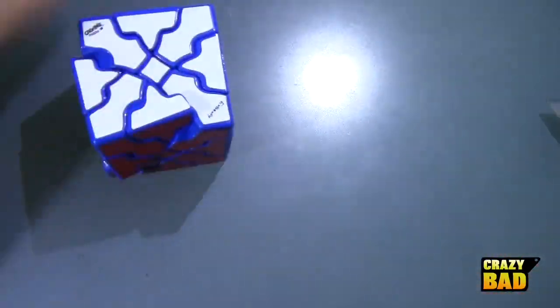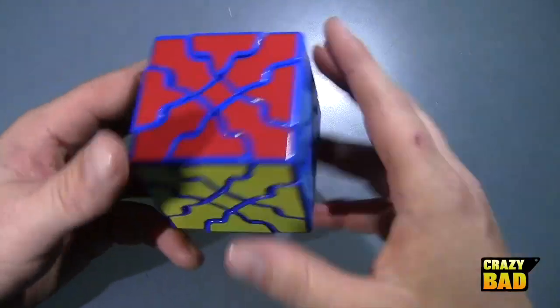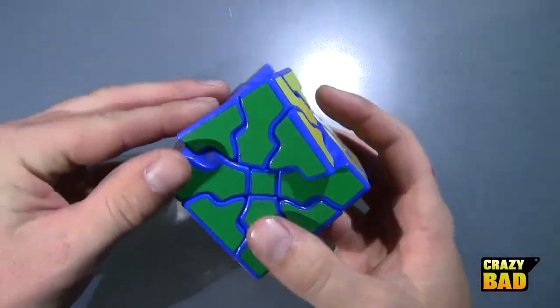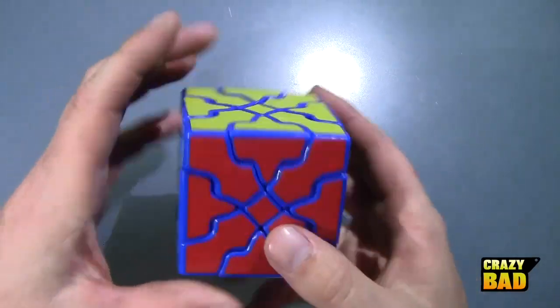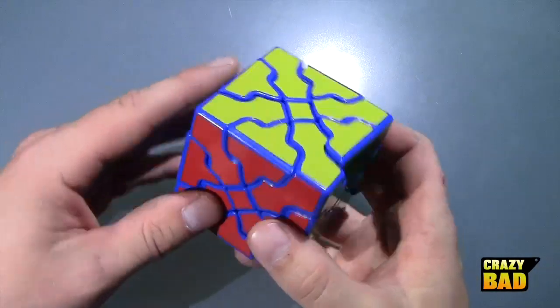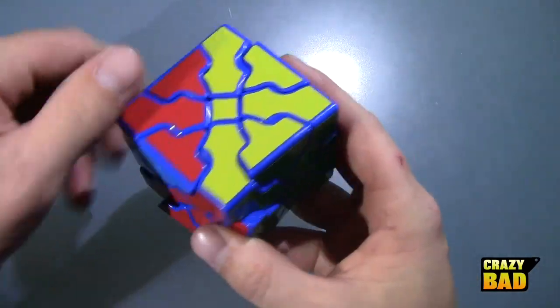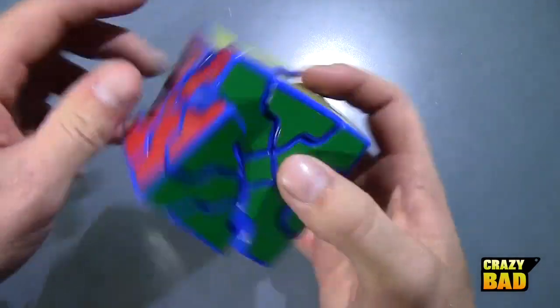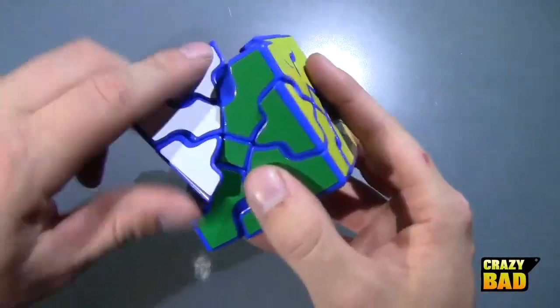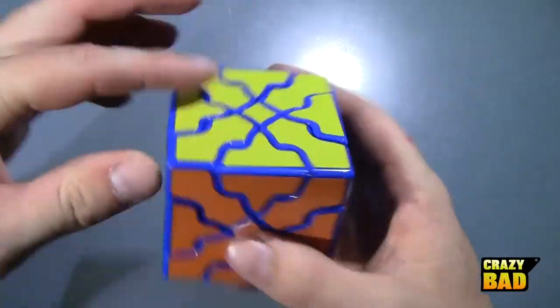All right, so this one is a blue one. Tony Fisher got I think the brown one, there's like a chocolate version they call it. But yeah, this one turns just the same. It's very, very nice. Wow.